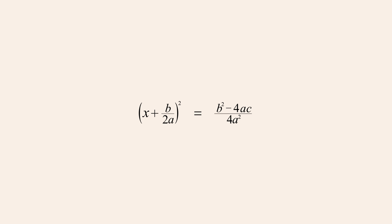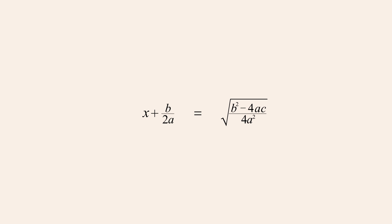Now, to eliminate the square on the left side of the equation, we take the square root of both sides. Since the square root of the square of an expression is the same as the absolute value of that expression, the square root of the square can be replaced with the absolute value operation. The absolute value of the left side can then be eliminated if we add a plus or minus sign in front of the right side. Then, on the right side, instead of taking the square root of the entire fraction, we can take the square root of its numerator and denominator separately. Taking the square root of the denominator 4a-squared gives positive or negative 2a. However, since the entire fraction can already be positive or negative, the plus or minus sign in the denominator is redundant and can therefore be eliminated.